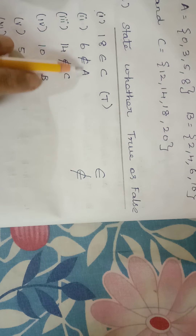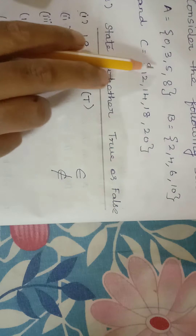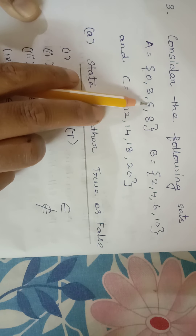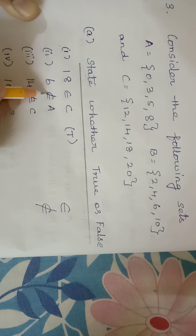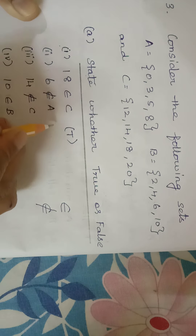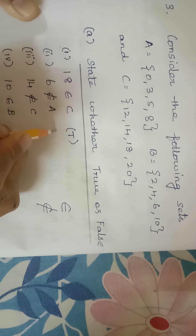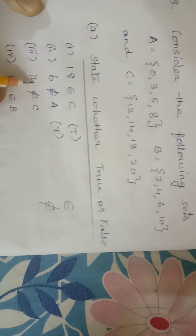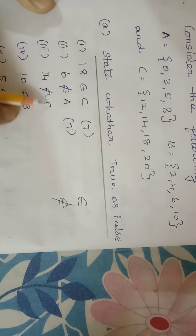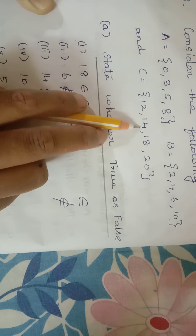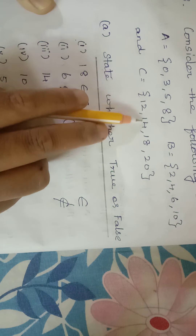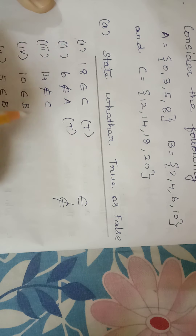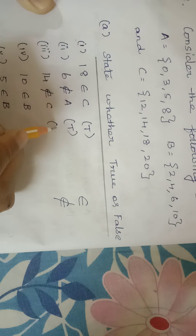6 ∉ A — 6 is not in A, so 6 does not belong to A. That is true. Next: 14 ∉ C — but 14 is in C. It is stated as 'does not belong,' so that is false.